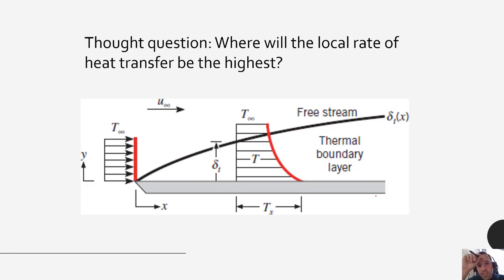First I want to introduce a thought question. So we talked about this growing boundary layer, and this is thinking just in terms of laminar flow. So thinking through this, where do you think the local rate of heat transfer will be the highest? So give yourself some time, you can hit pause if you want to stop and think about this some more, but where in terms of X will the heat transfer be highest? Would it be here at the leading edge, or here where the boundary layer is the thickest?